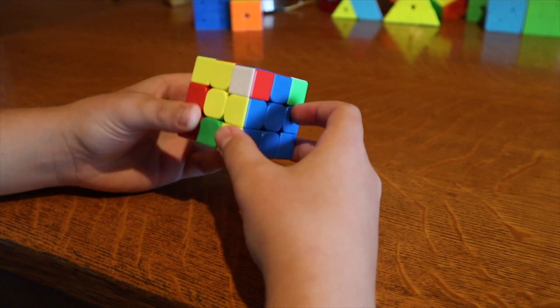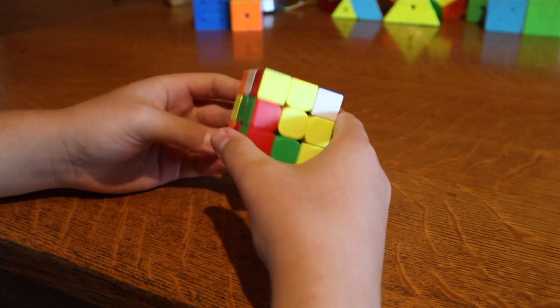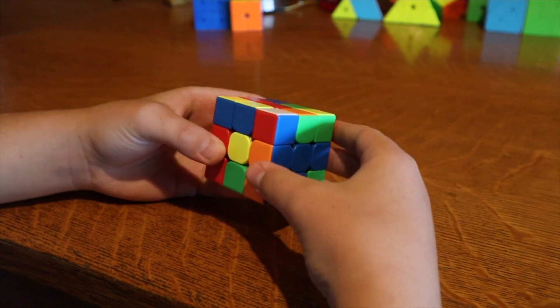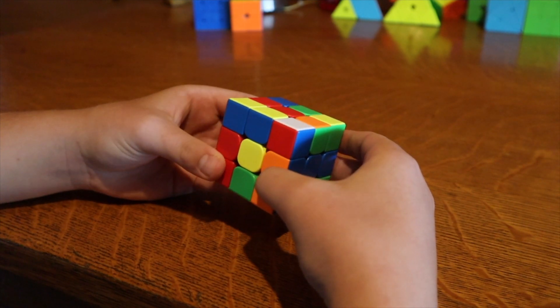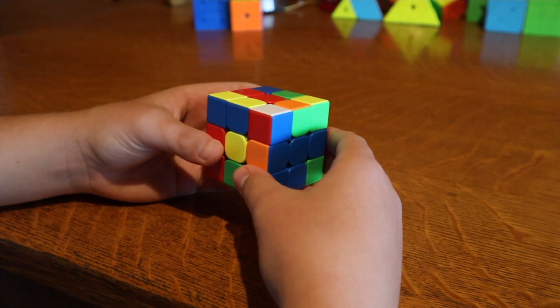Then I knew that after that it would take me a while to recognize the next F2L pair since I almost never do orange cross. The friend that I was racing with had already done this solve and he got a nine second solve which was his new PB. So finally I decided to do orange cross.